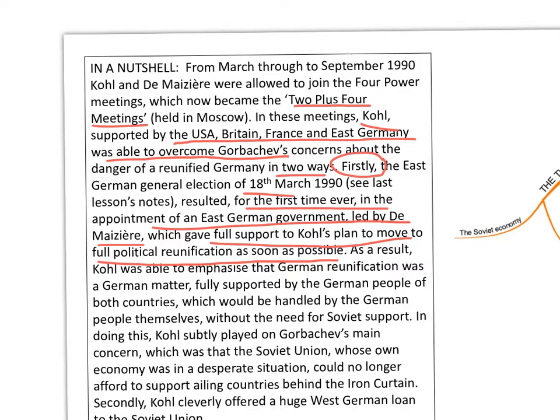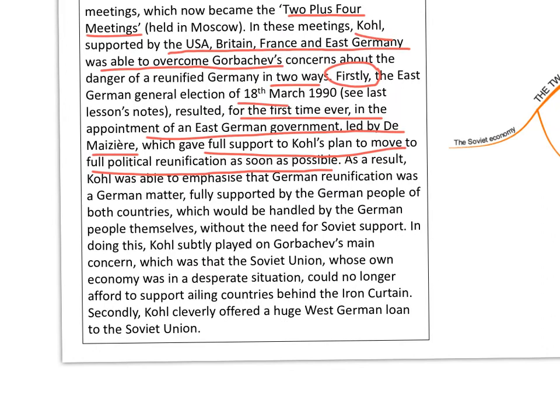As a result, Kohl was able to emphasise that German reunification was a German matter, fully supported by the German people of both countries, which would be handled by the German people themselves without the need for Soviet support. The argument subtly played on Gorbachev's main concern — that the Soviet Union, whose economy was in a desperate situation, could no longer afford to support countries behind the Iron Curtain.